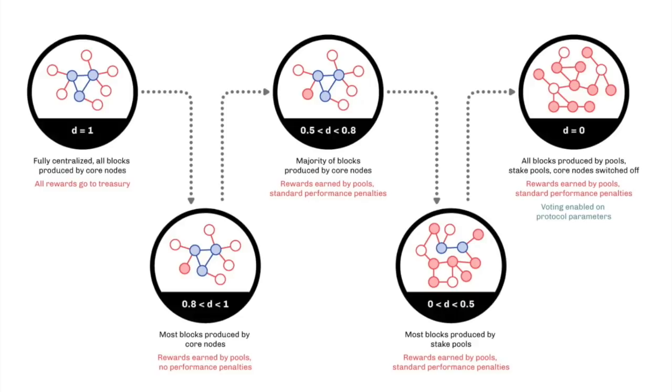When D is less than 0.8, stake pool performance is taken into account. The next major milestone will happen when D drops below 0.8. Below that level, each pool's performance will be taken into account when determining the rewards that it receives. Above that level, however, the pool's performance is ignored. The reason for this is to avoid unfairness to pools when they are only expected to produce a few blocks.